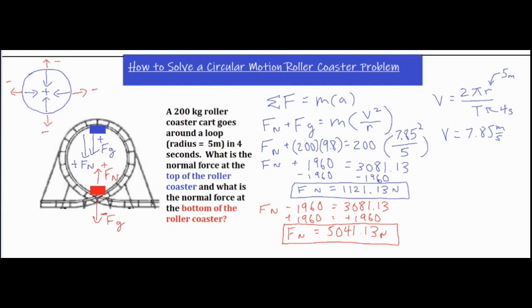To recap: one of the most important details is what is positive and what is negative. The roller coaster problem can be tricky because the sign convention changes between the top and the bottom of the loop. From there, we use Newton's second law — sum of forces equals m times a — but substitute centripetal acceleration v squared over r for a. In many cases we also use v = 2πr over T to find velocity if it isn't given directly. We plug in all values, work through the algebra, and find our two normal forces. I hope that was helpful — thank you for watching.